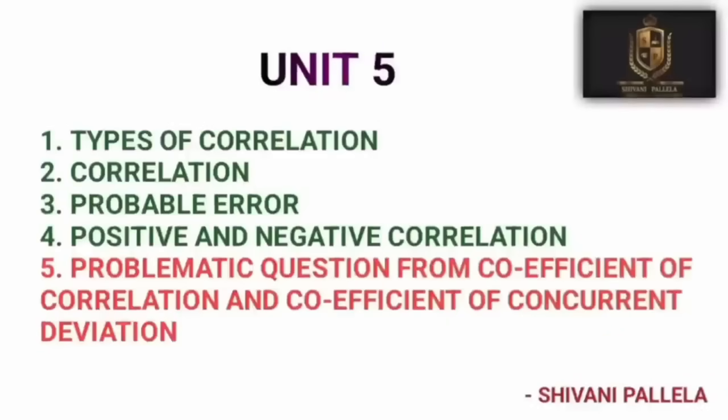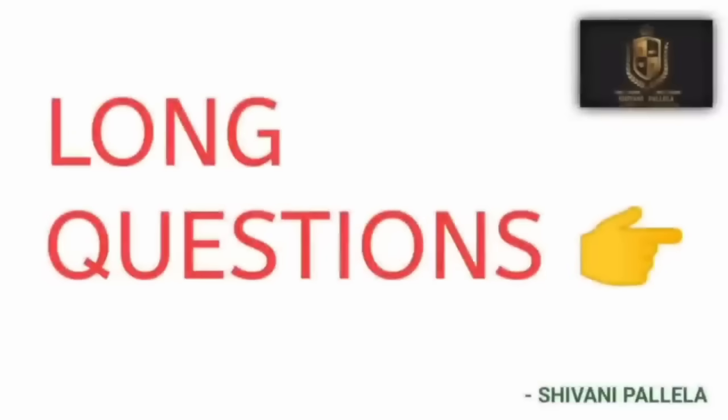From Unit 5, types of correlation and correlation are the two most important and repeated theoretical questions. Apart from theory, they can also ask problematic questions on correlation and concurrent deviation.